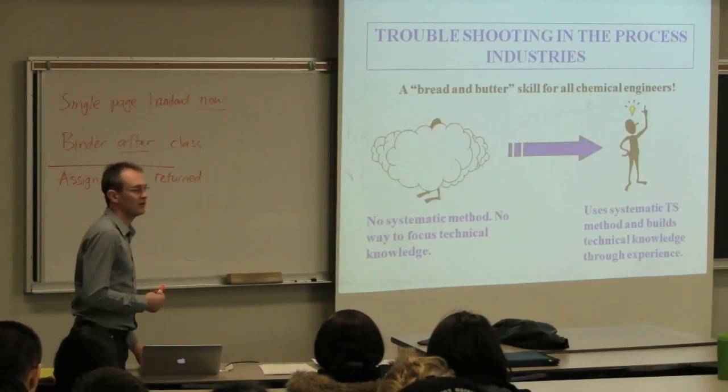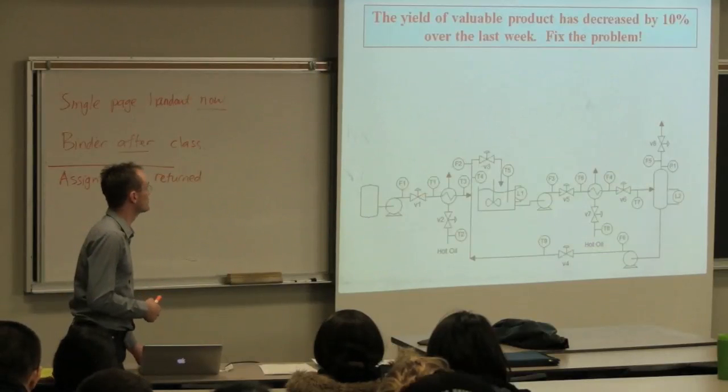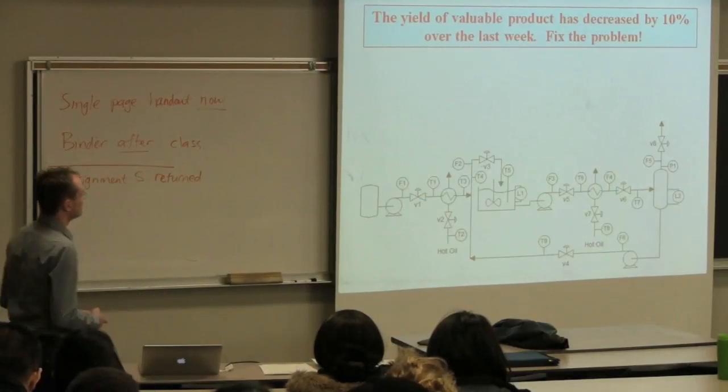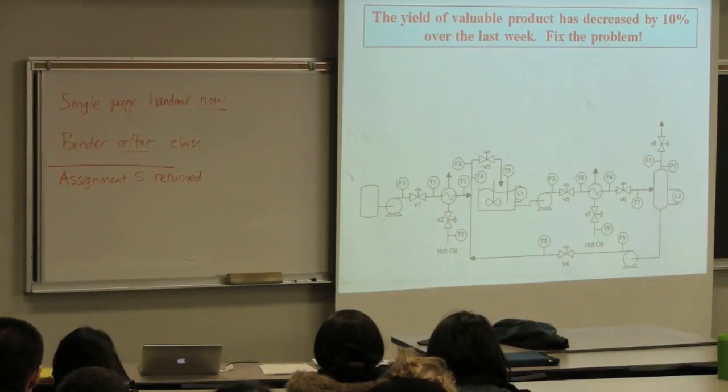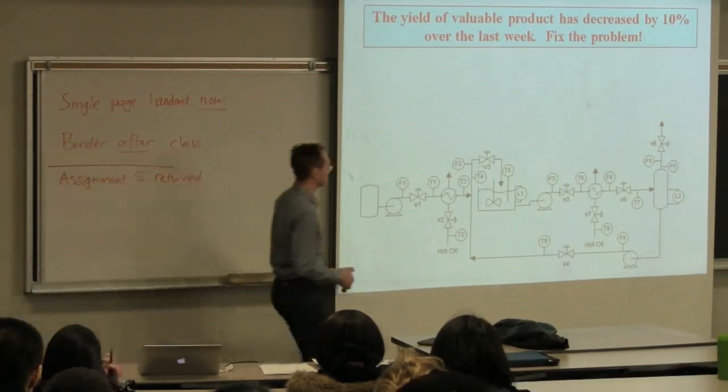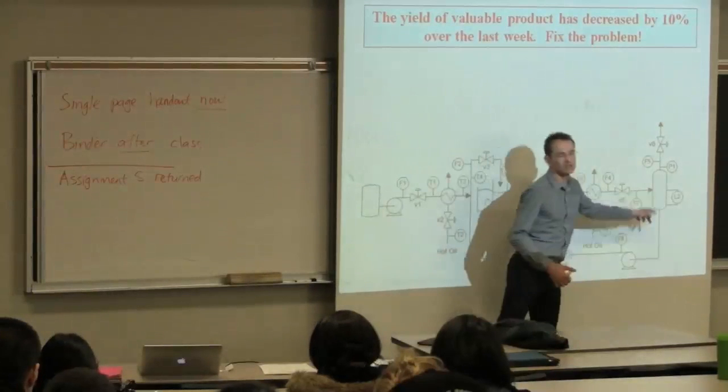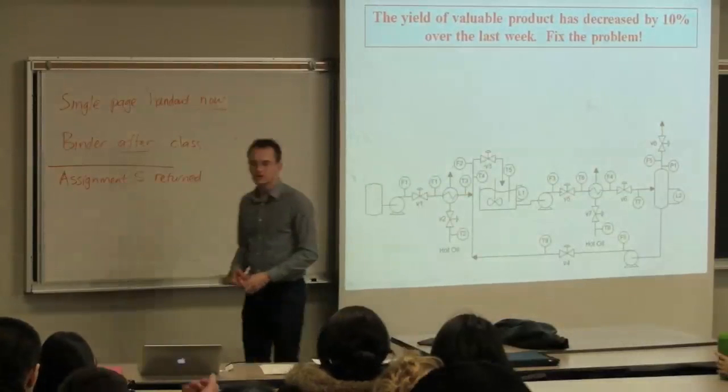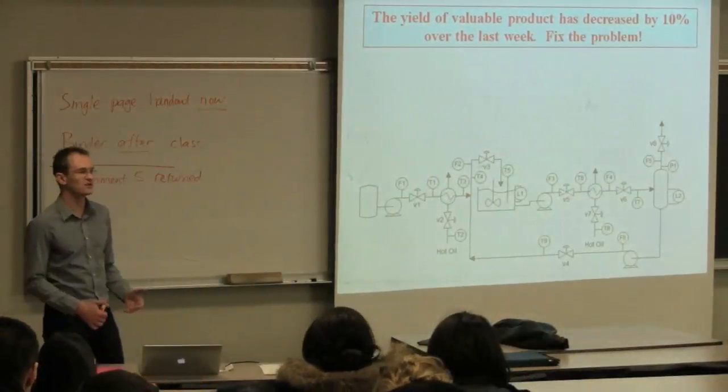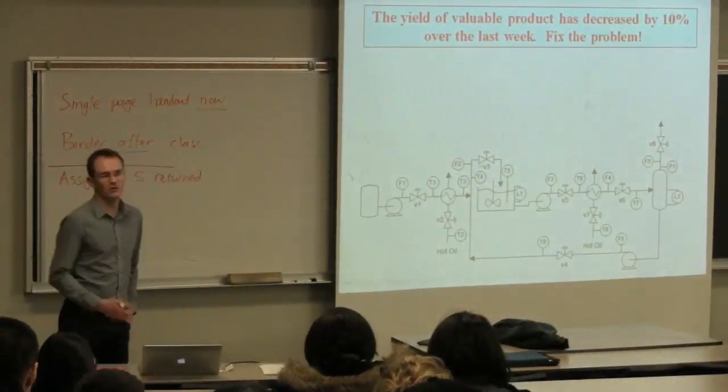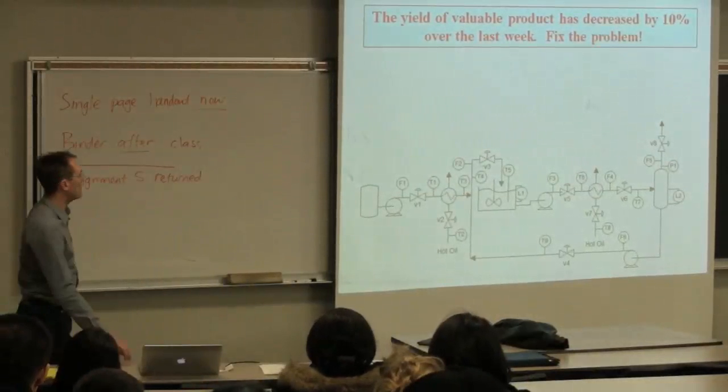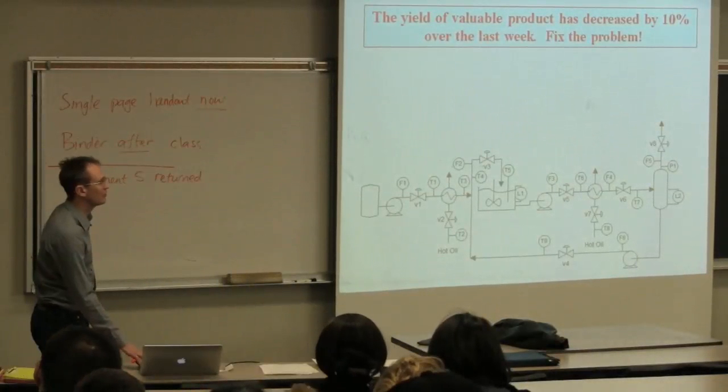We're going to make it a bit more formal and take a look at how it's applied to troubleshooting chemical processes. Here's an example: the yield of a valuable product is decreased in this flow sheet. We have a reactor in the center, a recycle stream coming back from separation. The overall yield is decreased by 10%. That's the standard job that you would have to do.